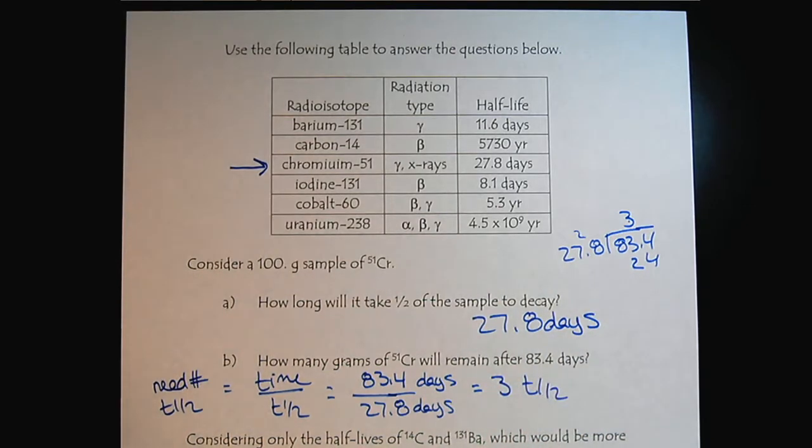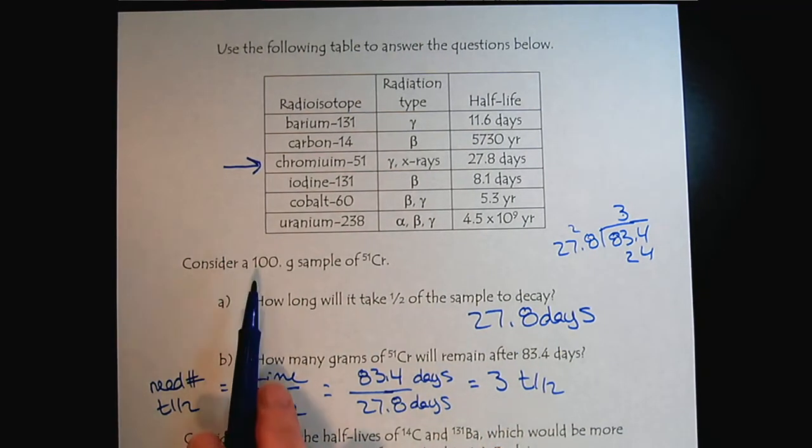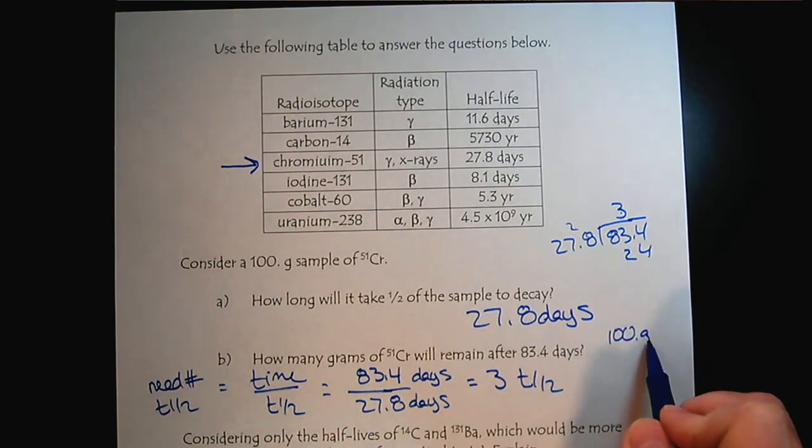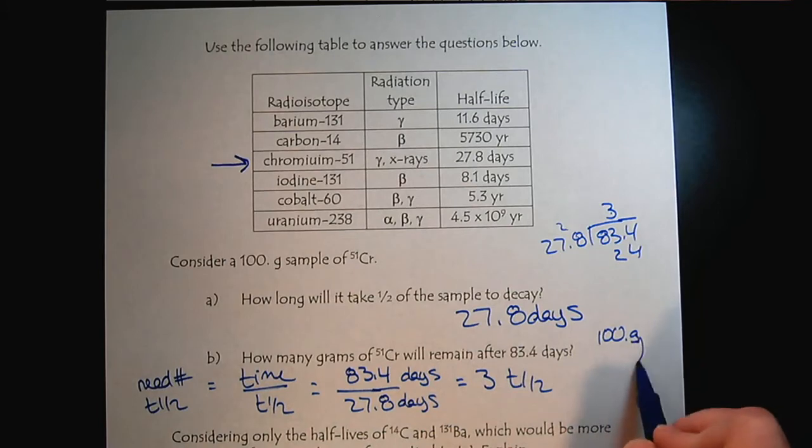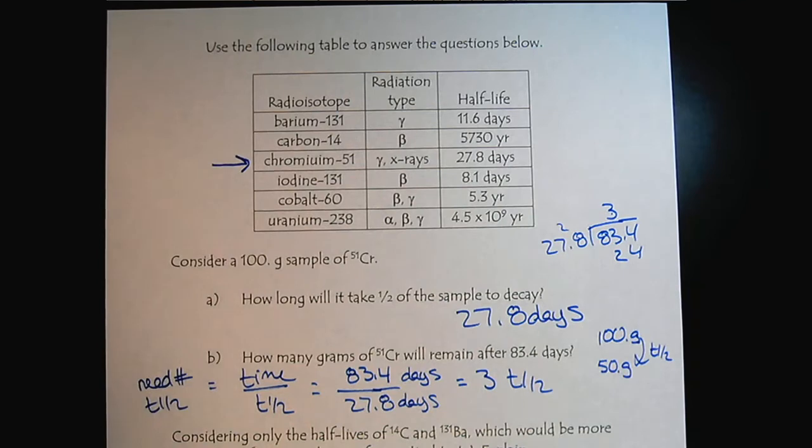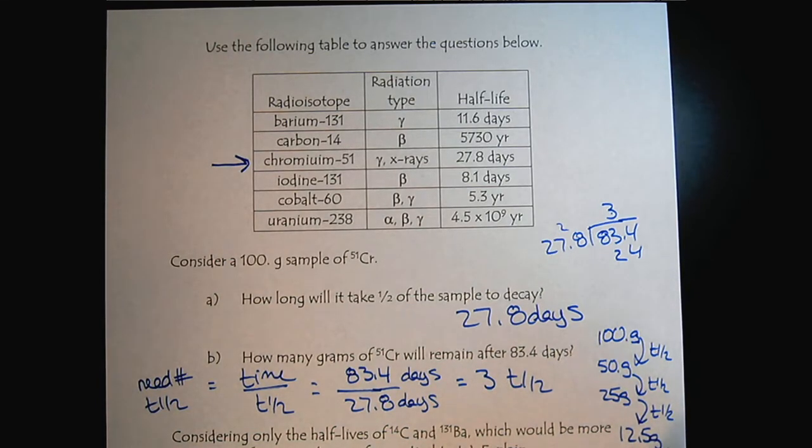So we would get three half-lives. So now we can estimate of the 100 grams of chromium. So we started with 100 grams. And after the first half-life, we will have 50 grams. After the second half-life, we will have 25 grams. And after the third half-life, we will have 12.5 grams of chromium 51.